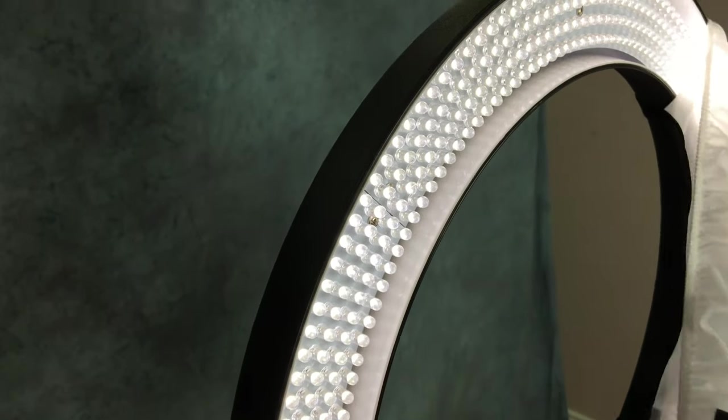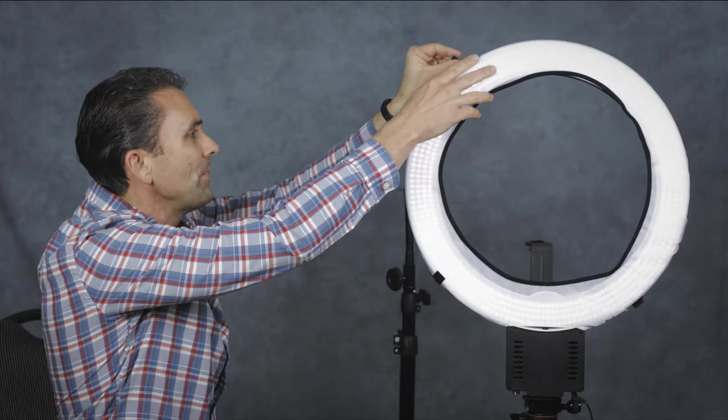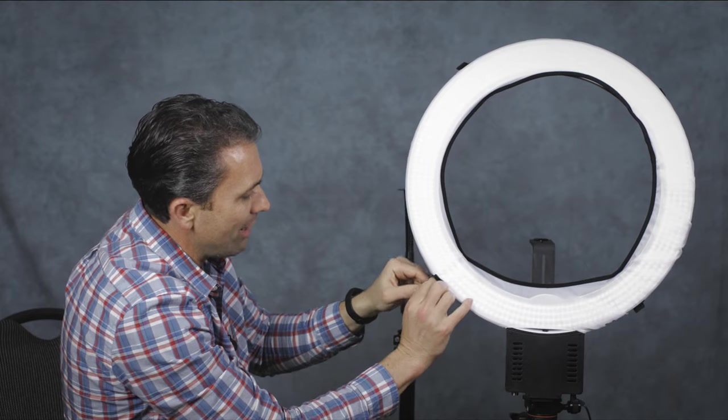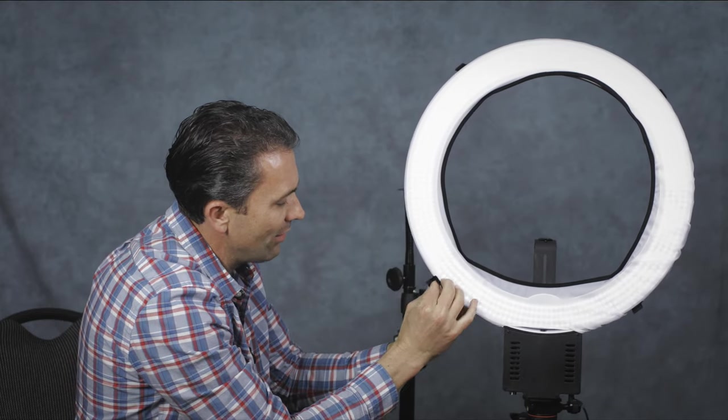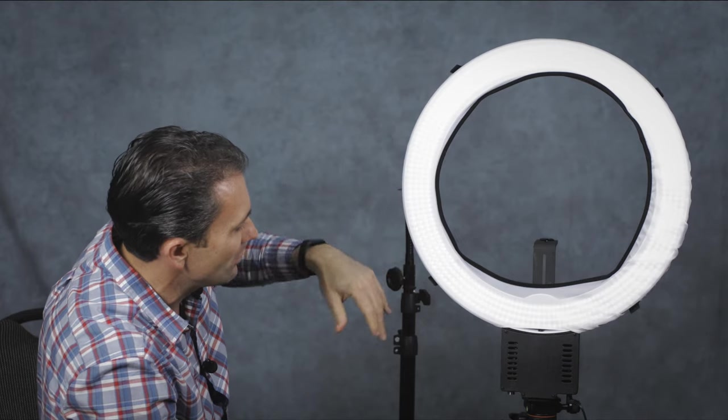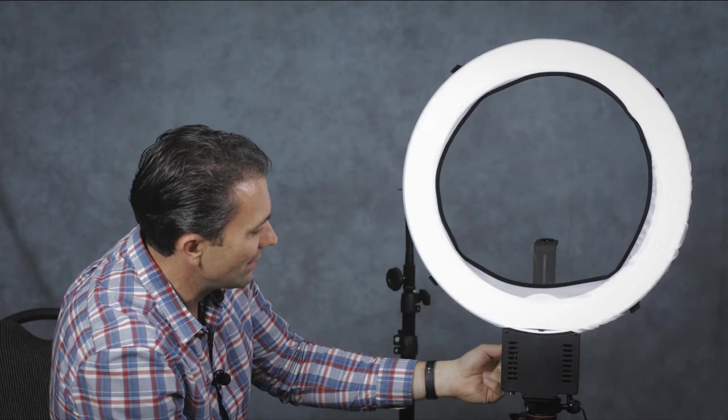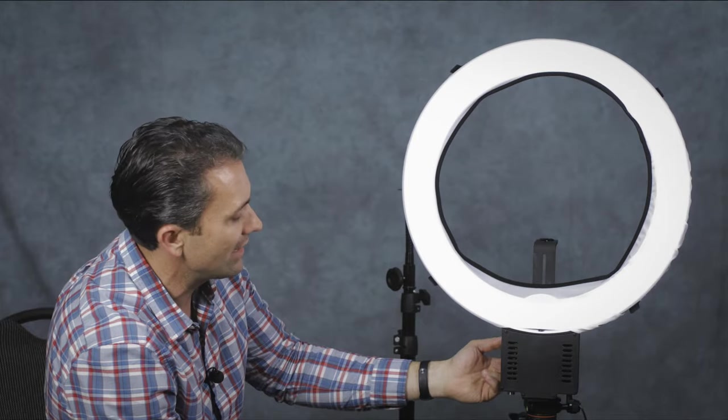And so it's very easy. It uses simple Velcro. So bravo for simplicity. Just simple Velcro straps to attach that. And thus once you have that quickly attached, it just diffuses the amount of light output. And so it's a little easier on the eyes. And also it helps the light to be a little bit softer and eliminate some of the hot spots you might otherwise have.